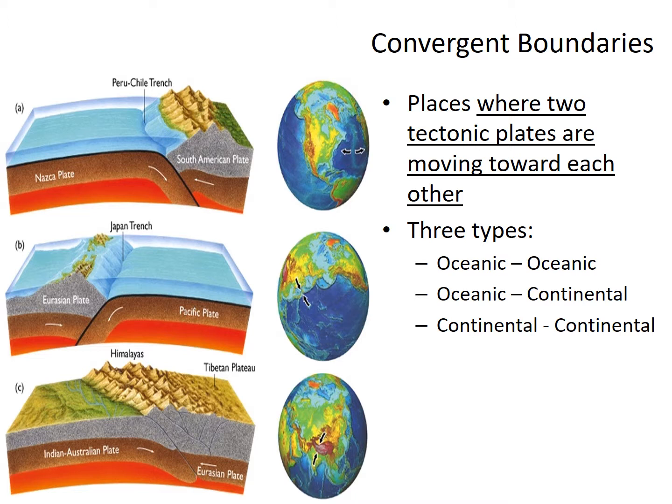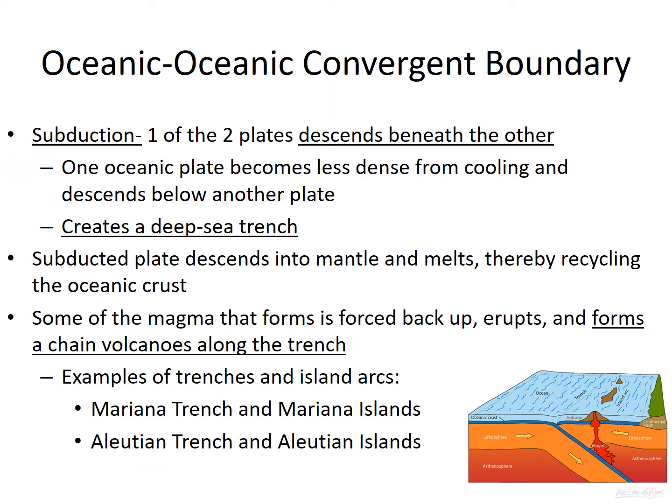So we've talked a lot about divergent boundaries. Let's talk about convergent boundaries. Convergent boundaries are where two tectonic plates are moving towards each other, and we have three types: oceanic-oceanic, oceanic-continental, and continental-continental. An oceanic-oceanic subduction results in subduction, meaning one of the two plates will descend beneath the other because one plate is less dense. This creates a deep sea trench, and the subducting plate goes under, melts, and becomes part of the asthenosphere.